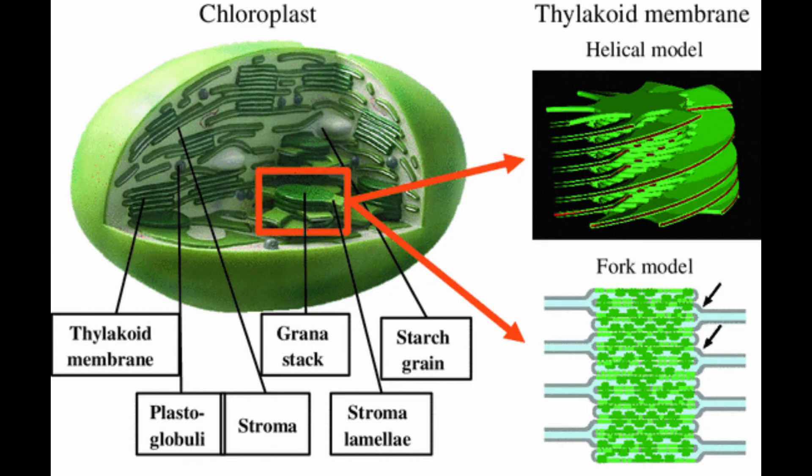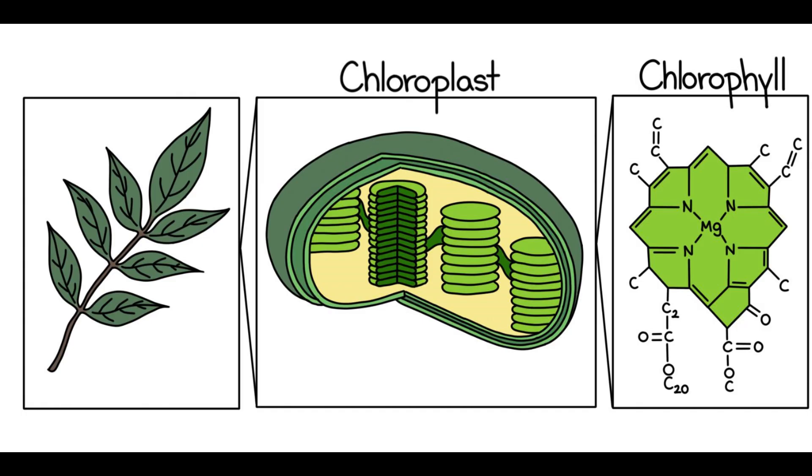They are double membrane organelles with the presence of outer, inner, and intermembrane space. There are two distinct regions present inside a chloroplast known as the grana and stroma. Grana are made up of stacks of disc-shaped structures known as thylakoids or lamellae. The grana of the chloroplast consist of chlorophyll pigments and are the functional units of chloroplasts.